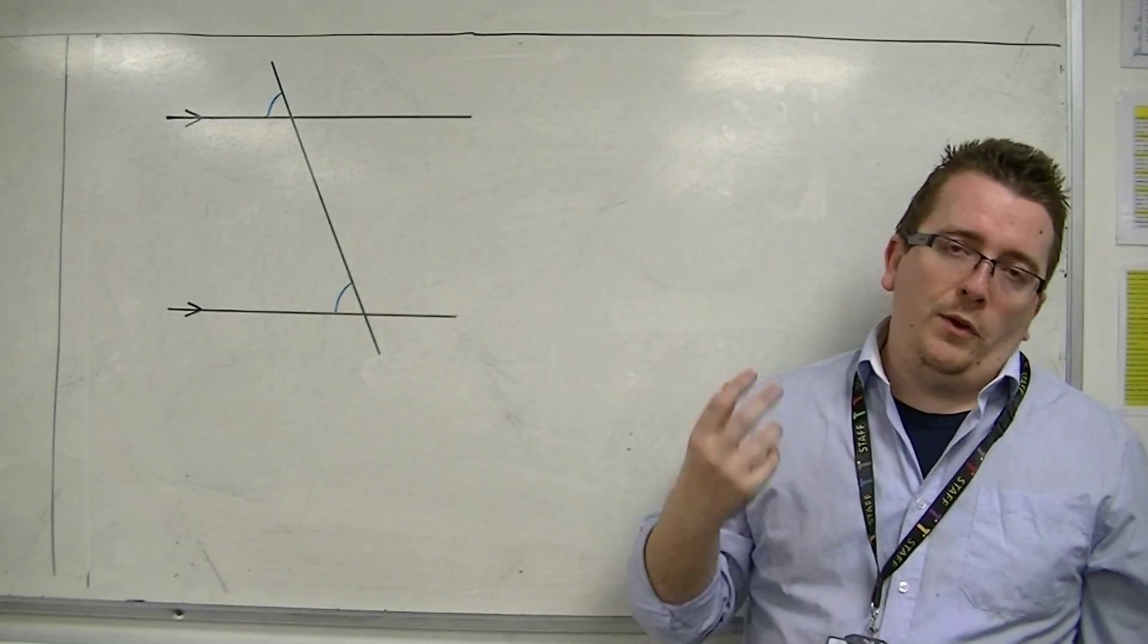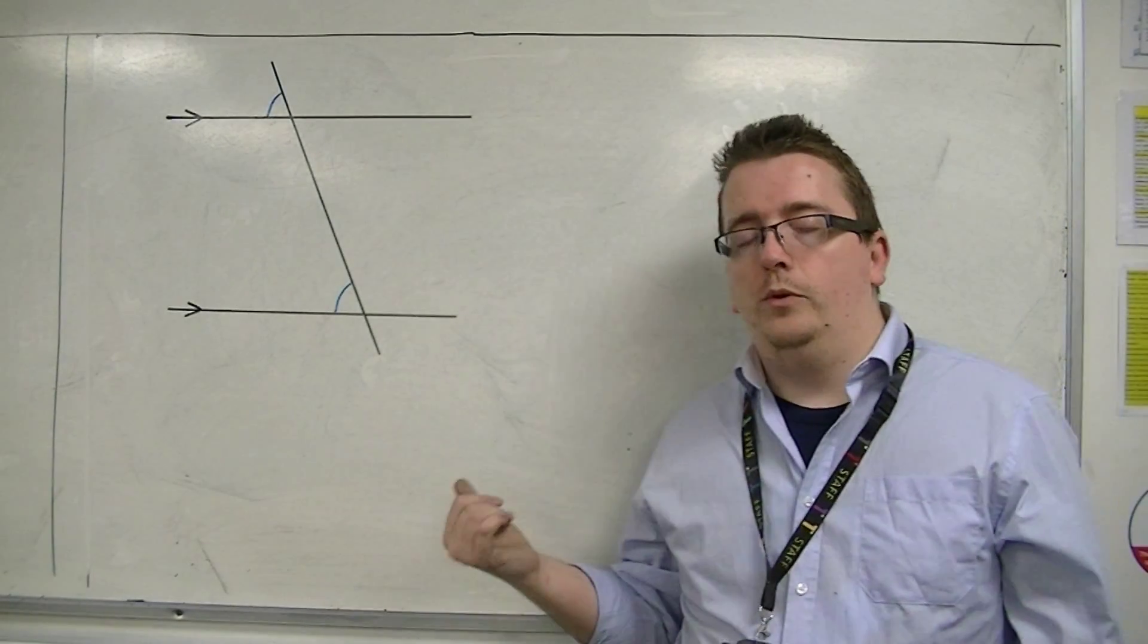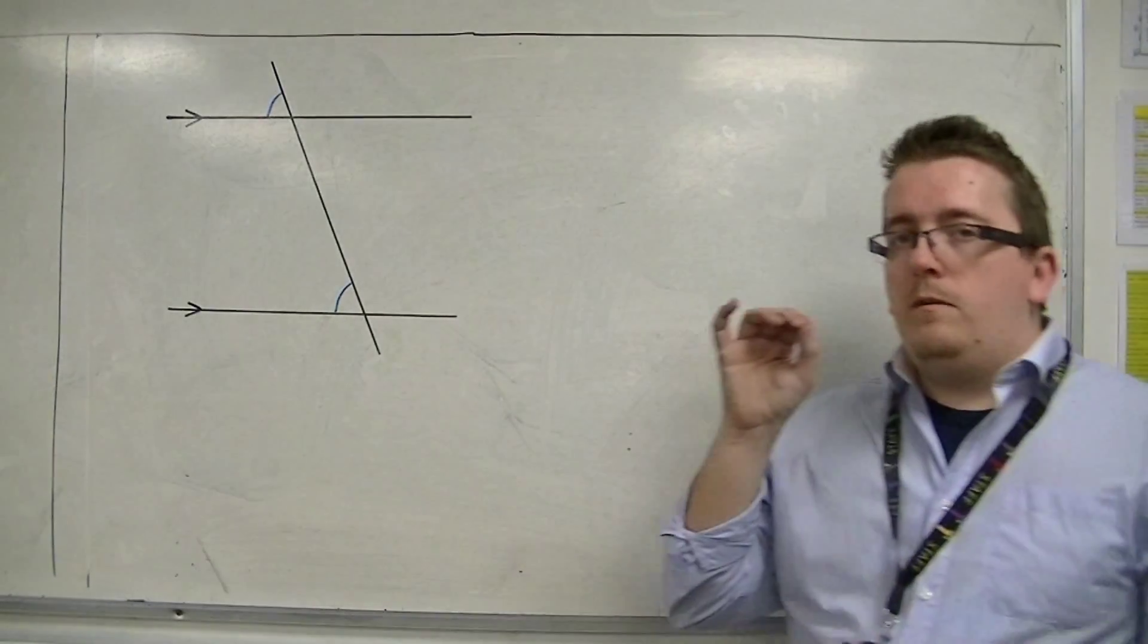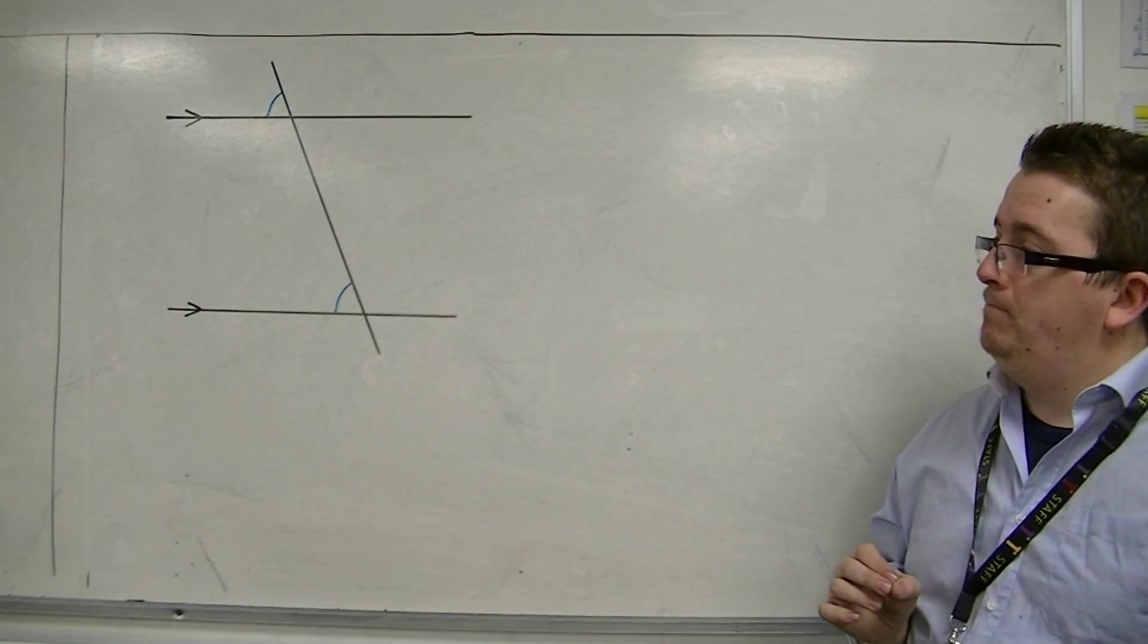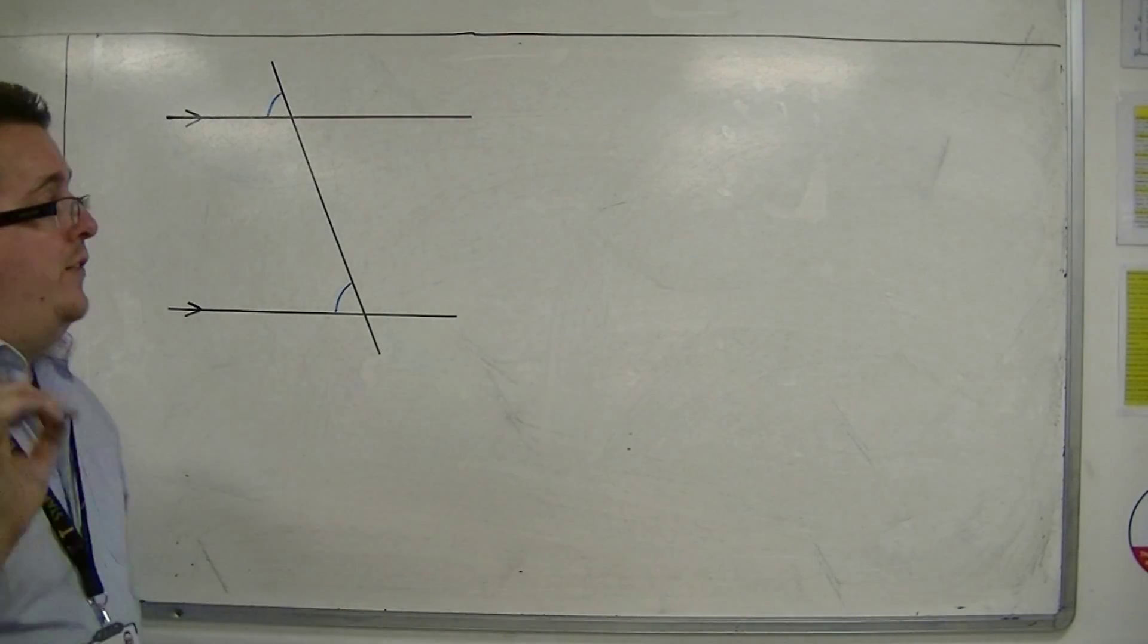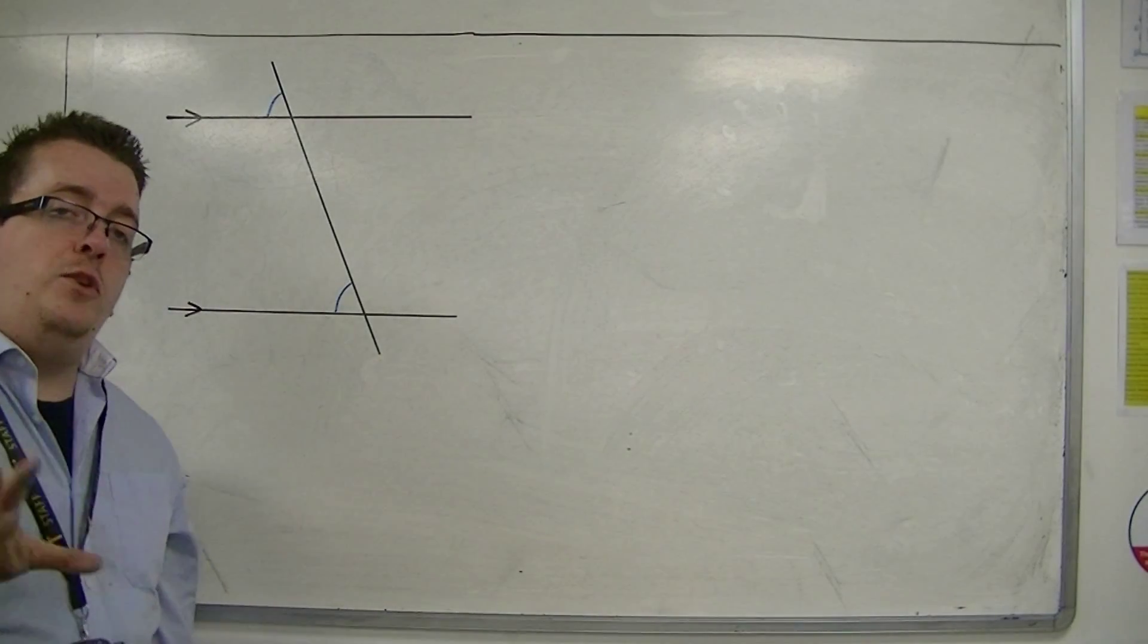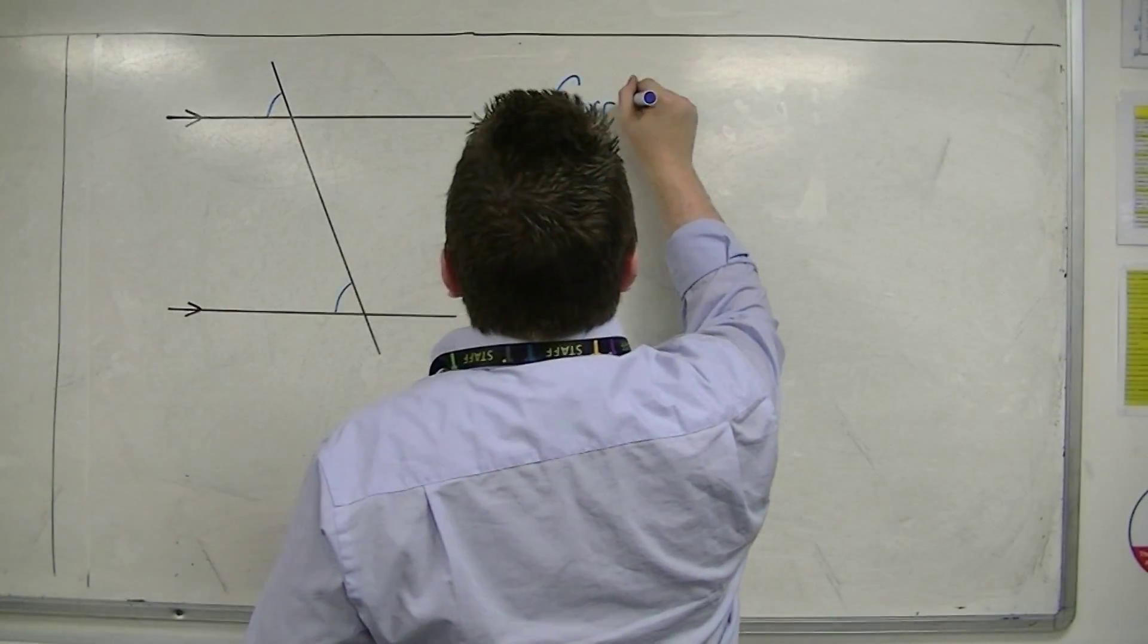But geometry cannot lie to us when we're drawing on paper or on a whiteboard. If two angles look similar, they nearly always will be the same. So if two angles like this look very similar, in all likelihood they probably are equal. And in this case they are. No matter what parallel lines you draw and which line you cross them with, these two angles will always be the same. They are known as corresponding angles.